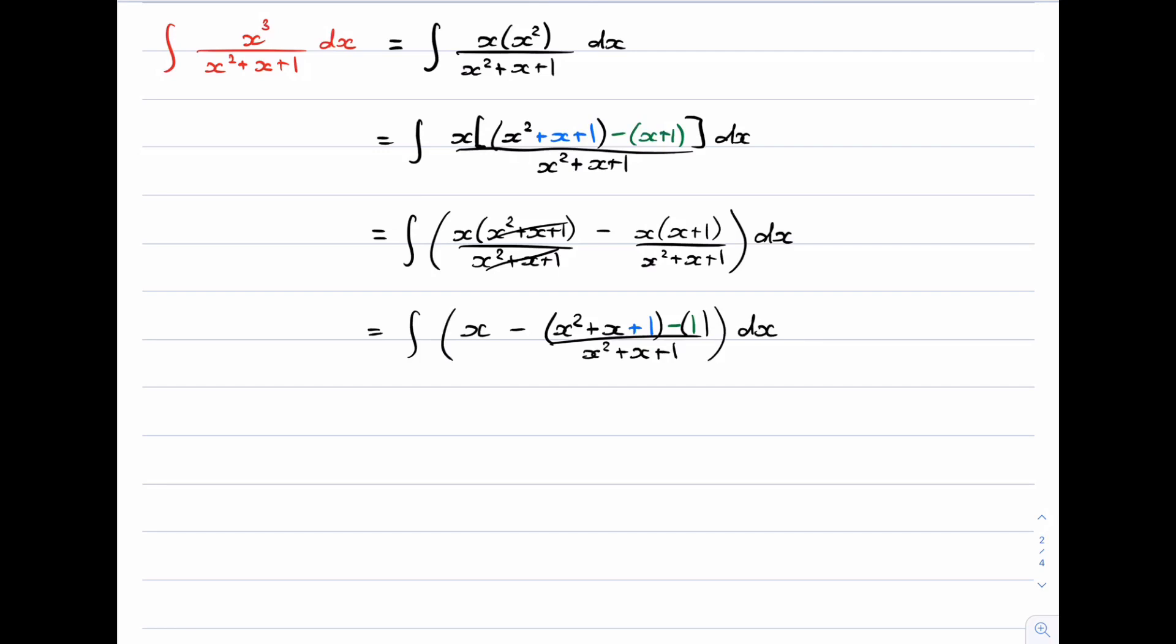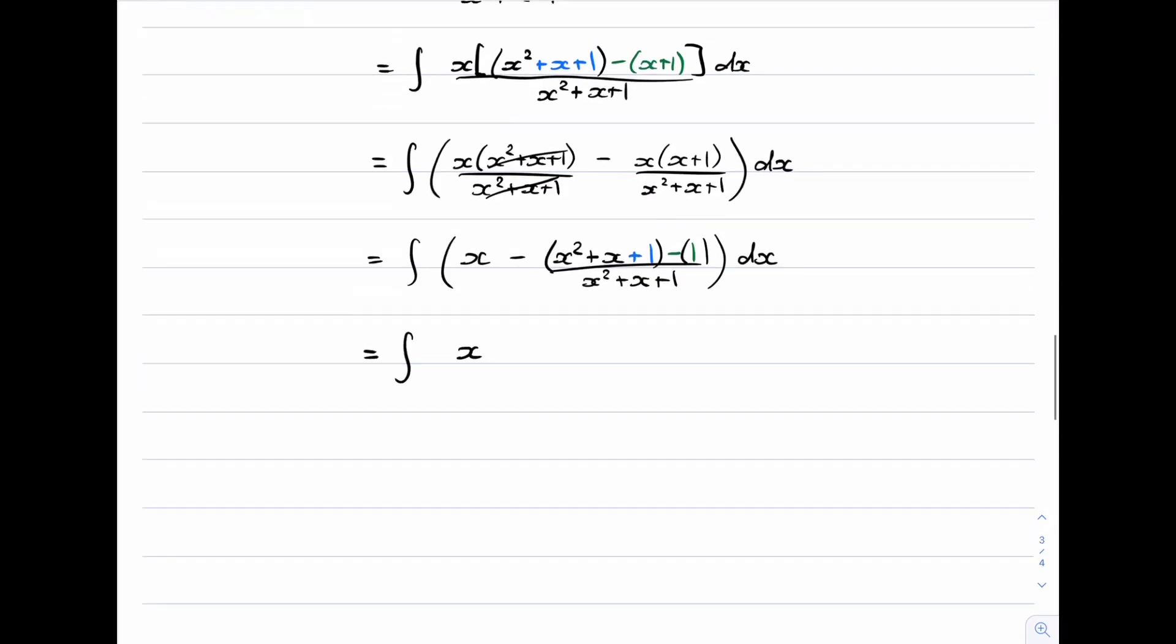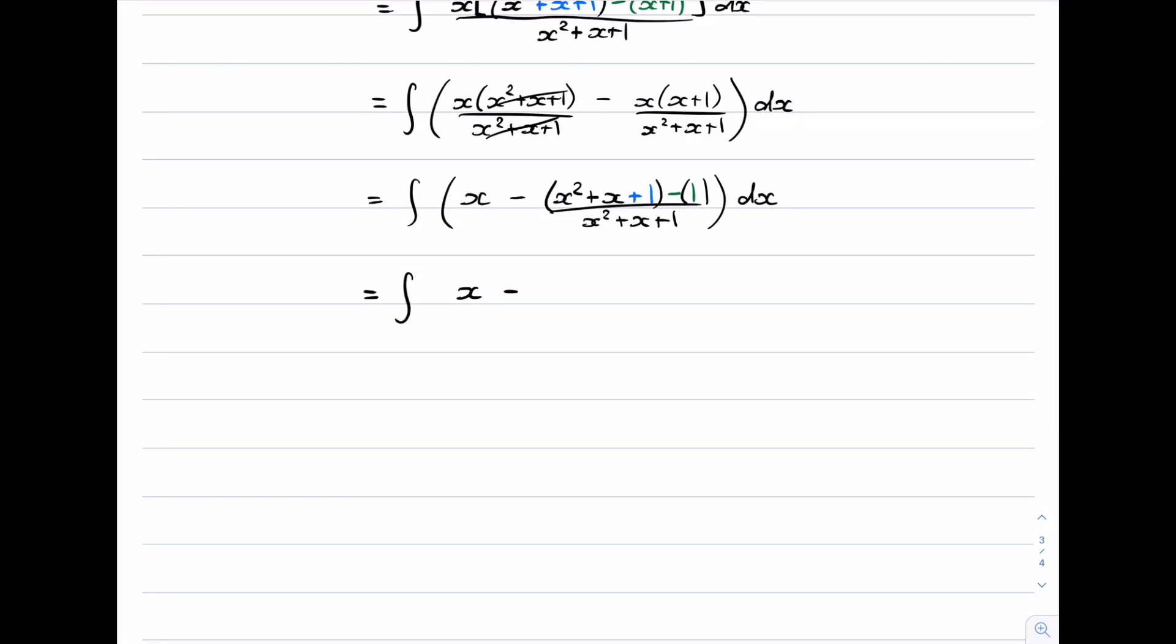And now we're going to once again split the numerator. So we have the integral of x. Now splitting the numerator gives us x squared plus x plus 1 over x squared plus x plus 1. And now be very careful here because we have a minus 1 times that negative 1 there. So that's actually going to turn out to be a plus 1 over x squared plus x plus 1 dx. And then again you can see that this is going to cancel with that and we're going to be left with just 1.